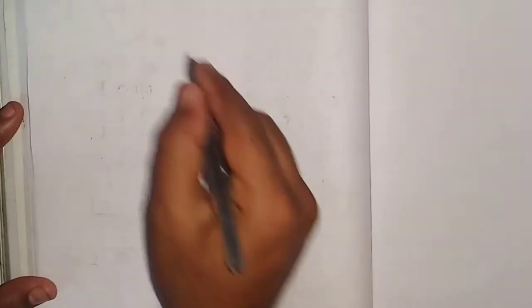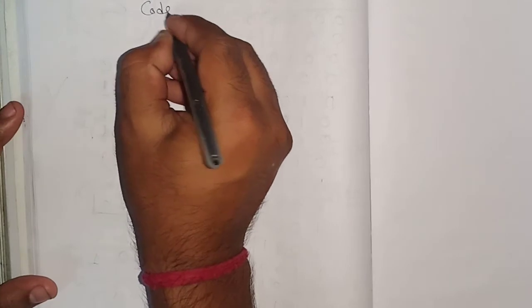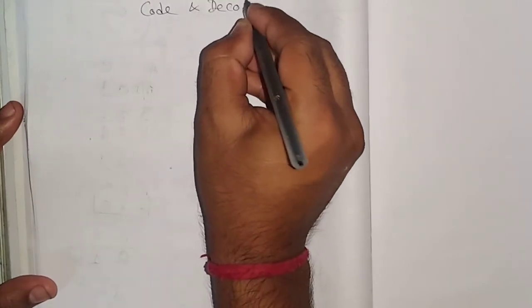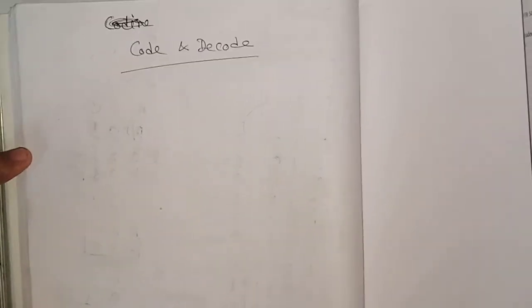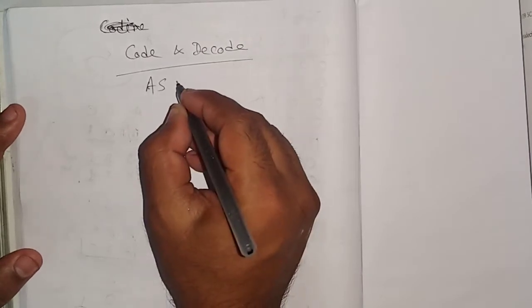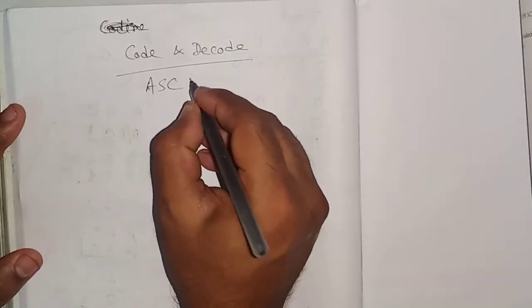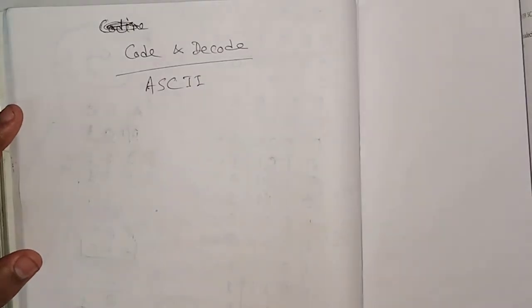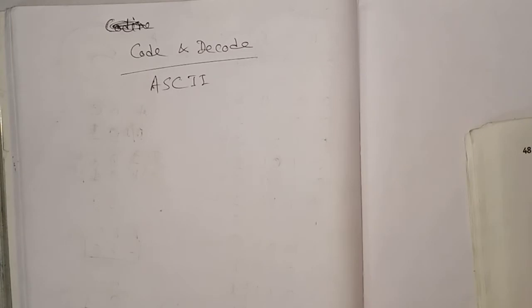Good morning students. Today we will discuss code and decode. What is code and decode? We will learn code and decode through ASCII value. ASCII stands for American Standard Code for Information Interchange. This is the full form of ASCII code.